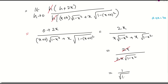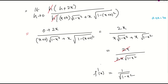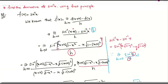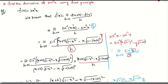Cancelling 2x, the answer is 1 by root of 1 minus x square. This is f prime of x — the derivative of sine inverse x. So directly we know this formula, and if they ask you using the first principle, this is the way of doing it.